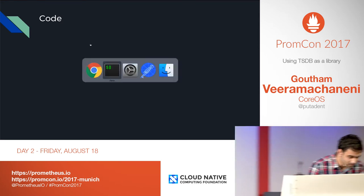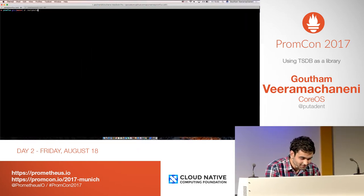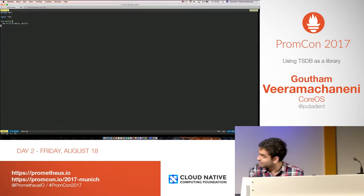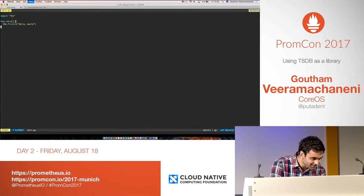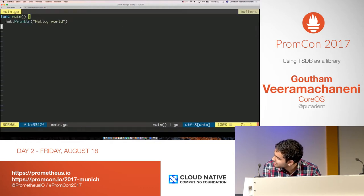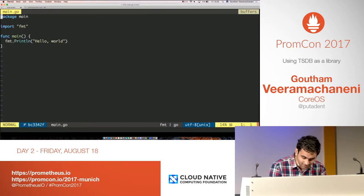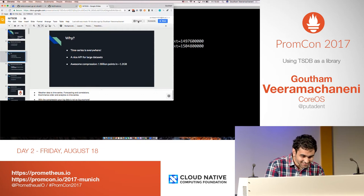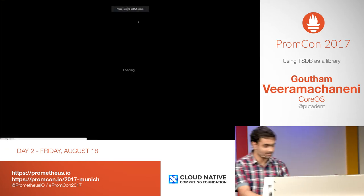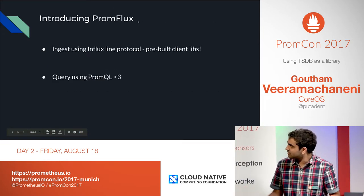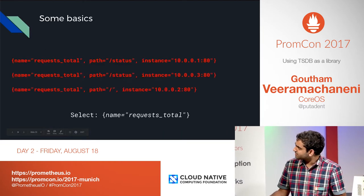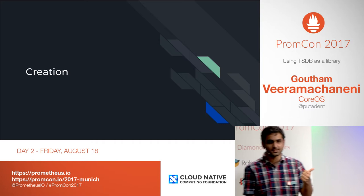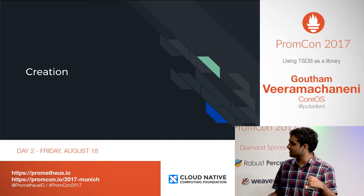Now let's get to the code. I'm going to structure it into three parts: creation of the database, inserting data into the database, and querying the database. This is how the API looks: you have the open function which gives you the DB object. You pass the data directory, a logger, the Prometheus registry where you want to register your metrics, and the options. From Fabian's talk, we know we use a write-ahead log — how frequently do we want to flush it? If it's 10 seconds, you can lose 10 seconds of data. If you set it to zero, you always flush before acknowledging the write. The retention duration is the same as Prometheus: how long do you want your data? And we can configure block sizes for compaction.